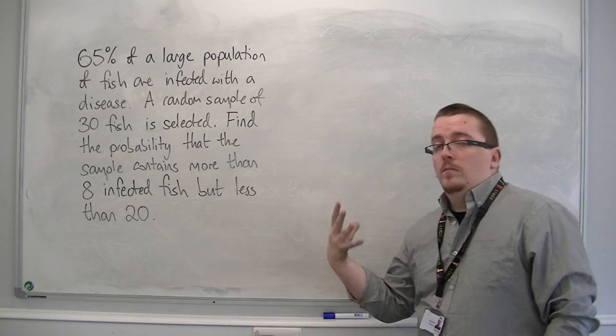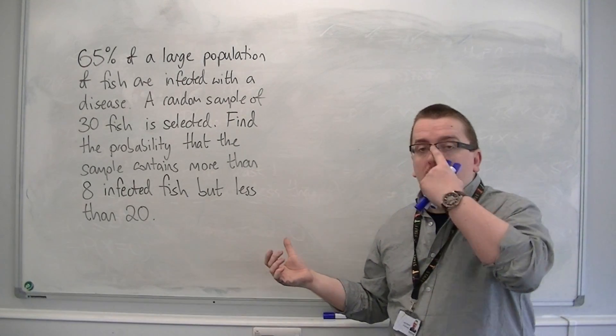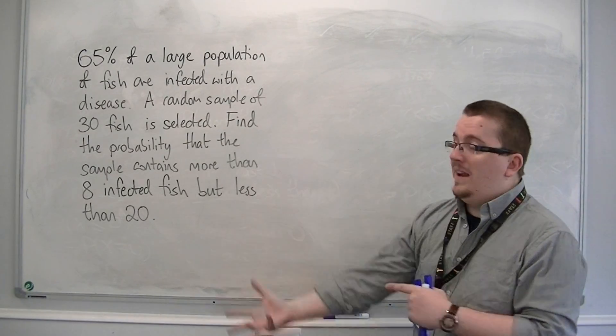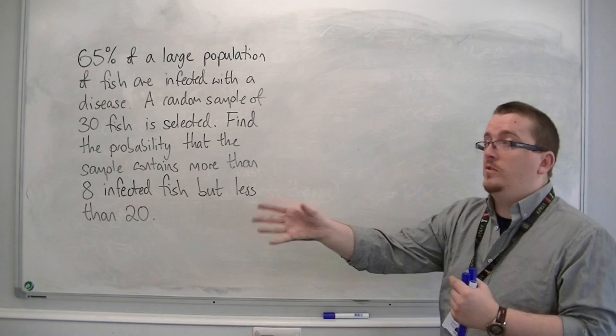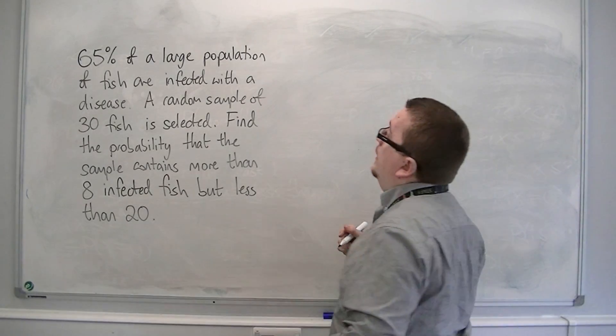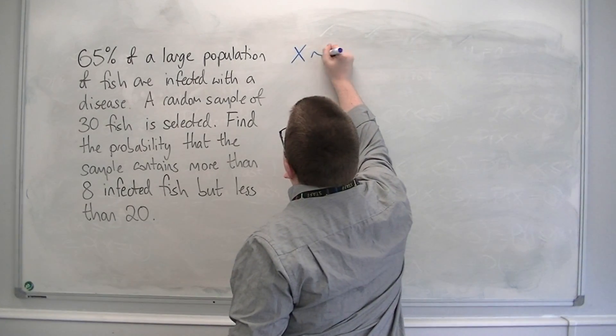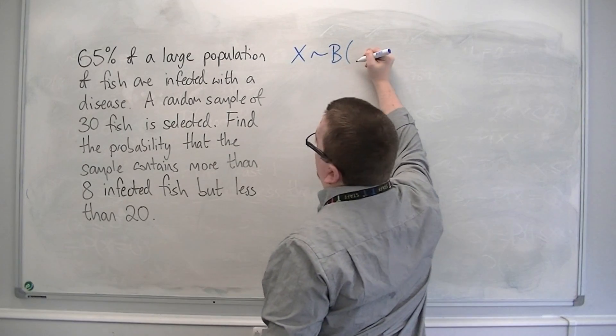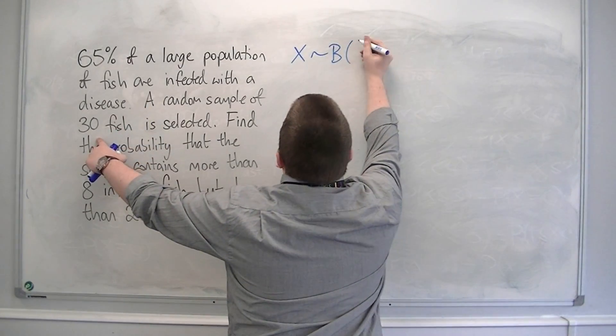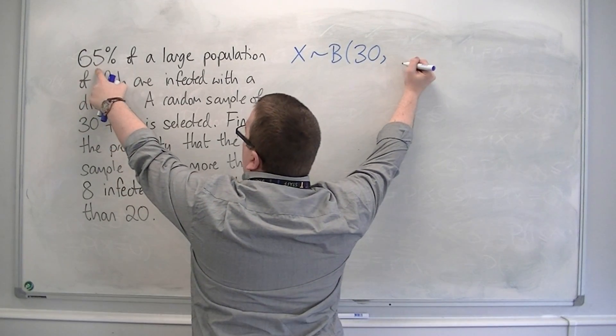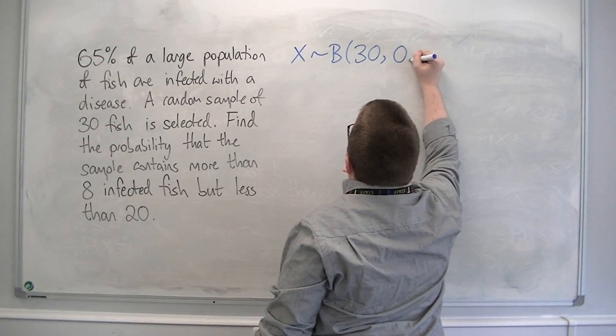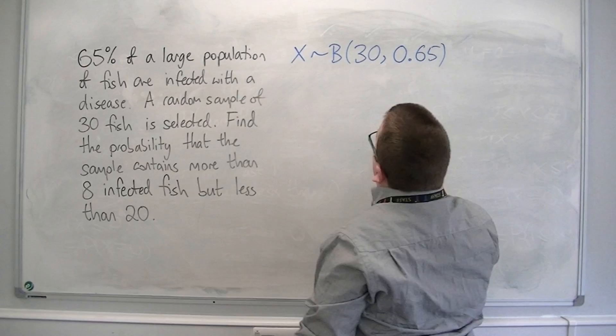We know that this is going to be binomially distributed because the fish are either infected or they're not infected. So we've got those two possible options. So we've got that X is binomially distributed. We're looking at a sample of 30, so N is 30, and the probability of being infected is 0.65. That's your probability P.